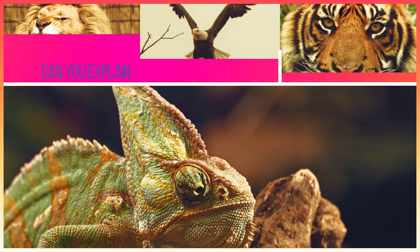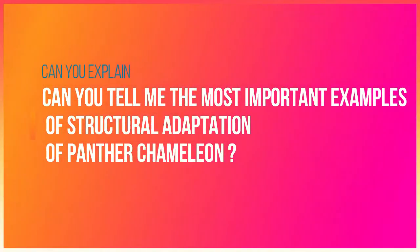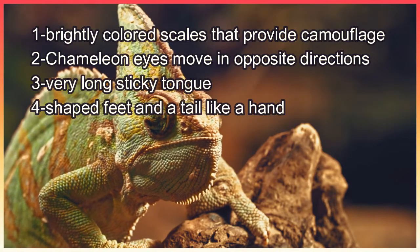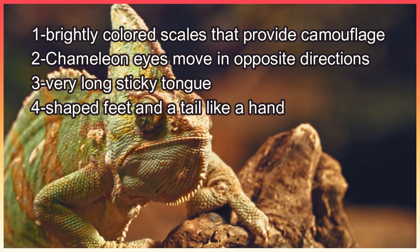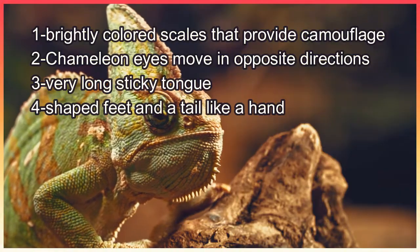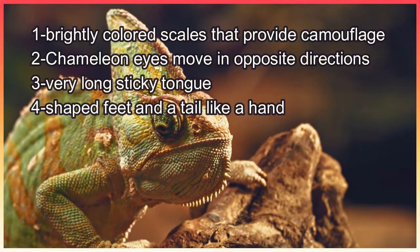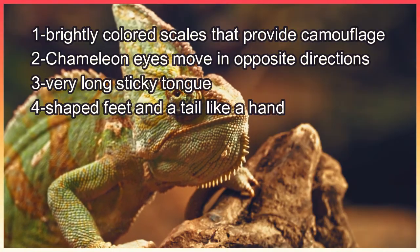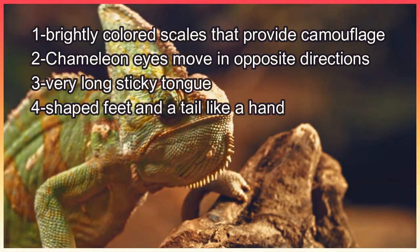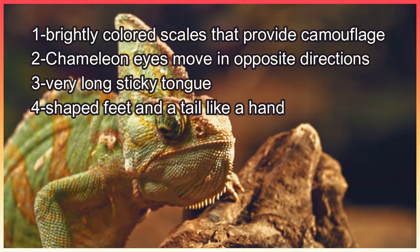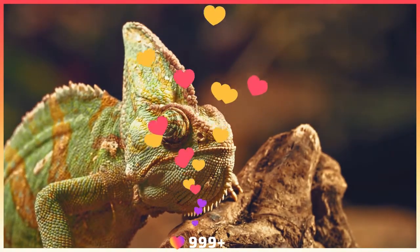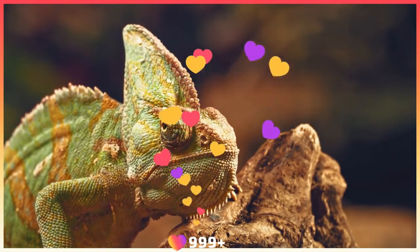Can you tell me the most important examples of structural adaptation of the panther chameleon? Brightly colored scales that provide camouflage, eyes that move in opposite directions, a very long sticky tongue, V-shaped feet, and a tail like a hand. Excellent! This is the end of lesson 2.